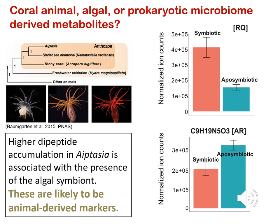To get insights into whether the metabolites of interest are of animal origin or come from the algal symbiont or the microbiome, we use the Aiptasia model, which is the sister species to corals, to do metabolomics and understand the accumulation of different metabolites under symbiotic and aposymbiotic conditions. This species is very similar to corals in that it houses dinoflagellate symbionts but doesn't biomineralize. We found many of the dipeptides and other metabolites associated with the coral thermal stress response to also be present and to show a pattern of accumulation suggesting they play a role in the symbiotic condition. For example, the RQ dipeptide accumulates to a higher extent in the symbiotic condition in Aiptasia, suggesting its role may be connected with the presence of the algal symbiont.